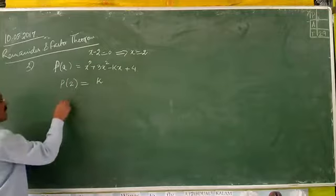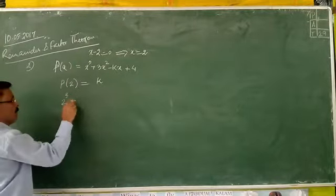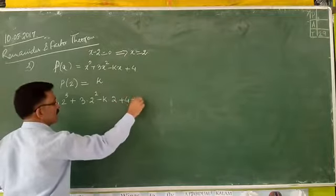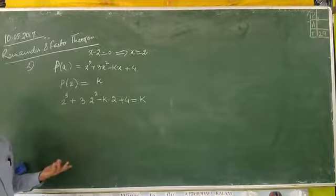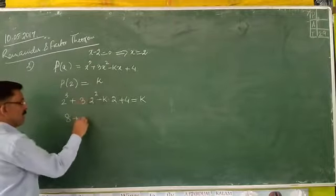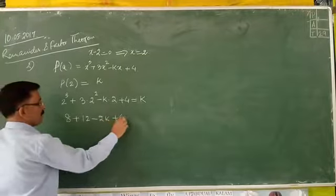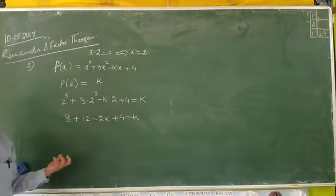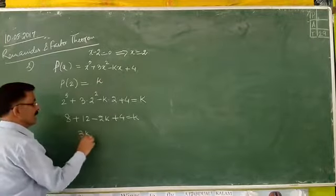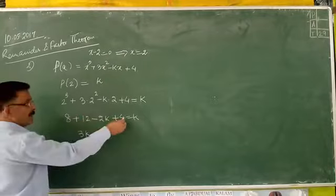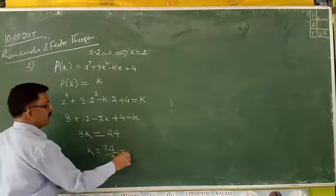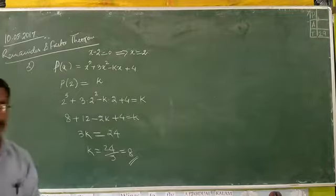Since P(2) = k, we put x = 2 into the function: 2³ + 3(2²) − k(2) + 4 = k. This gives 8 + 12 − 2k + 4 = k. So 24 = 3k, and therefore k = 8.